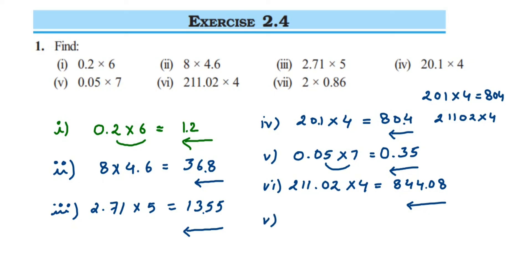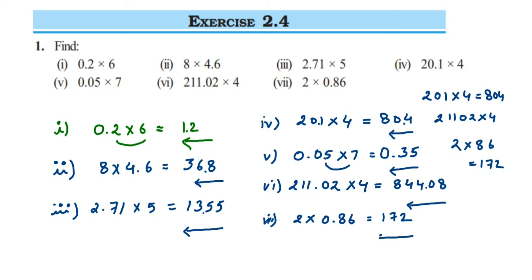The seventh and last question is 2 × 0.86. Multiply 2 × 86 = 172. After the decimal there are two digits, so from the right side after two digits — after 7 and 2 — we place the decimal. The answer is 1.72. I hope it's clear how to multiply decimal numbers. If you have further questions or doubts, drop a comment. Thank you so much for watching.